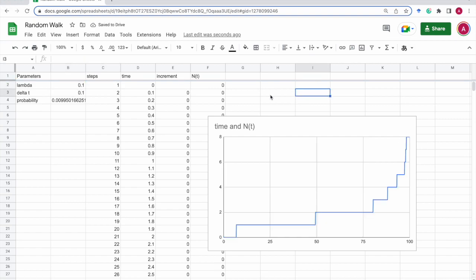So that was how to simulate Poisson processes using Google Sheets.